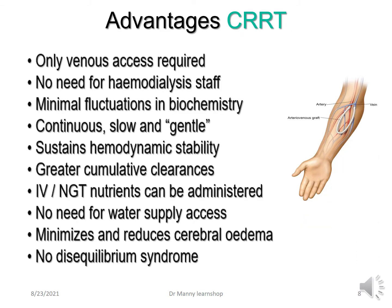What are the advantages of CRRT? You only need venous access — with intermittent renal replacement therapy you need arterial and venous access or an AV shunt. There's no need for hemodialysis staff; critical care staff are able to care for patients on CRRT. There are minimal fluctuations in biochemistry. It's continuous — daily, weekly — not just for three or four hours, which can result in anomalies like disequilibration syndrome. It sustains hemodynamic stability and appears to give greater cumulative clearances. The patient can receive IV and nasogastric feeds. There's no need for a water supply access, and it minimizes cerebral oedema, which prevents disequilibration syndrome.